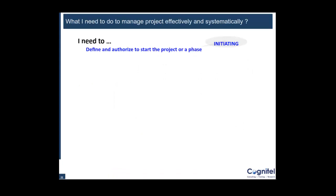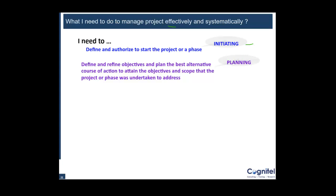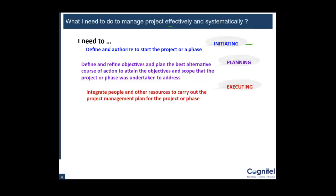So what do I need to do to manage a project effectively and systematically? First of all, we need to define and authorize our project or a phase — that's what we do under Initiation. After that, we need to define and refine our objectives and make certain plans for how to execute our project, which is done under Planning. Then you need to integrate people and other resources to carry out the project management plan, which is done through Execution.